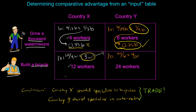To review, the difference between an input table and an output table is that the variable given is not the number of units of output that can be produced — rather it is the number of units of inputs needed to produce a single unit of output. The input in this table was the number of workers needed to grow a thousand watermelons and the number of workers needed to produce a single bicycle. We can calculate opportunity costs and determine who has a comparative advantage in two goods production from the data in an input table.